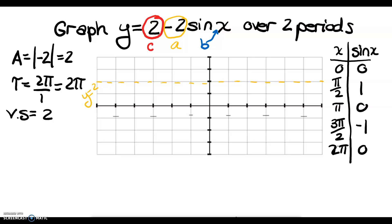I don't have a horizontal shift, so I skip the begin and end calculations. I label my x-axis with a period of 2π, starting at 0, marking 4 equal intervals to 2π, labeling all mid and quarter points. Since I need 2 periods, I also count 4 intervals backwards and label those.